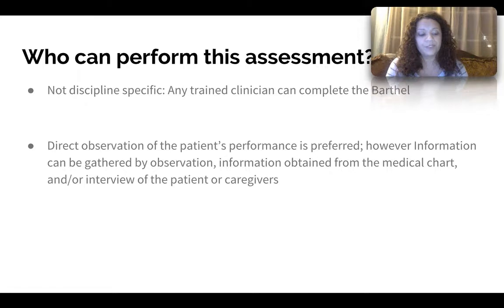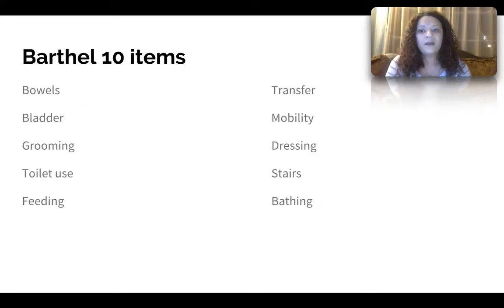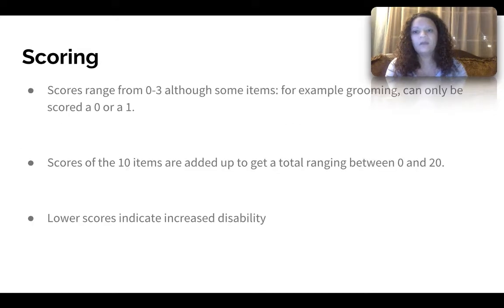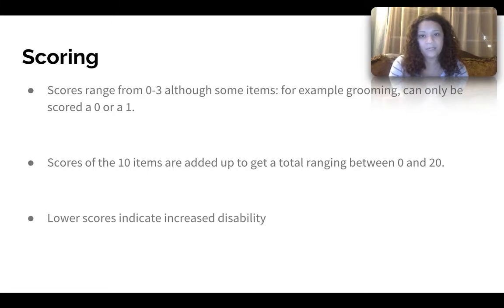The Barthel is composed of 10 items, looking at these ADLs: bowels, bladder, grooming, toilet use, feeding, transfers, mobility, dressing, stairs, and bathing. Scores range from 0 to 3, although some items like grooming can only be scored 0 or 1 — essentially you can or you can't do it. The scores of the 10 items are added up to get a total ranging between 0 and 20.